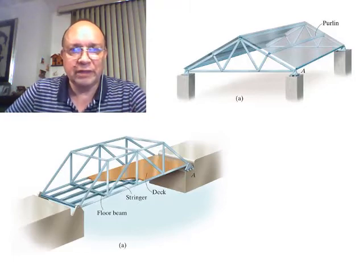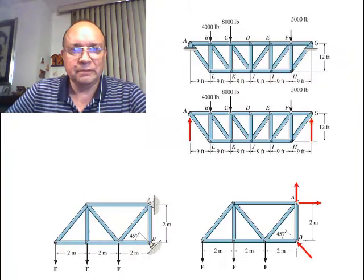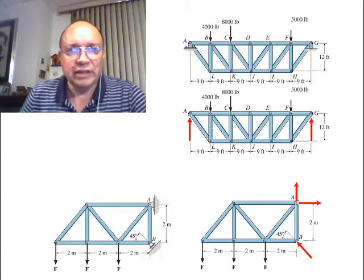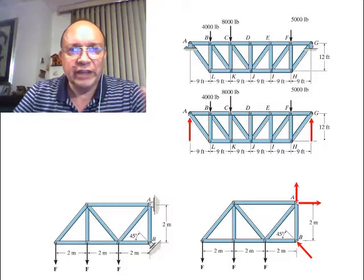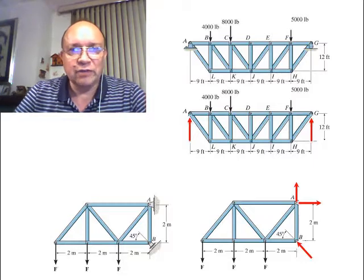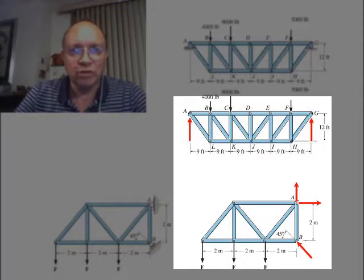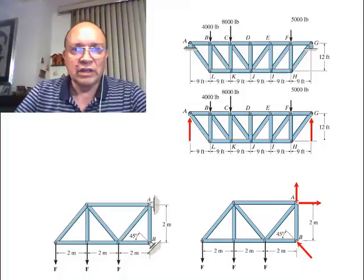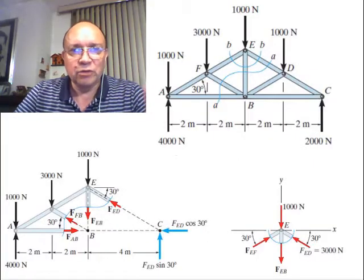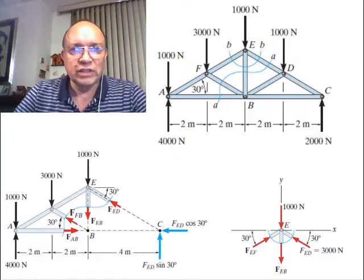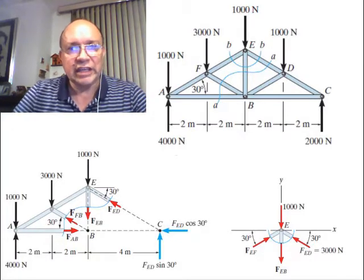Here you see models of the trusses as they will look on paper, and here you see these trusses as they will appear on your paper when you are finding the external forces — what we call reactions at the supports — shown as red arrows.